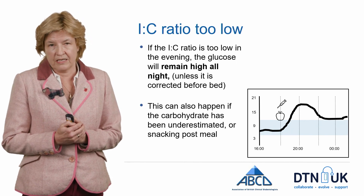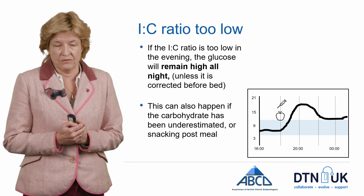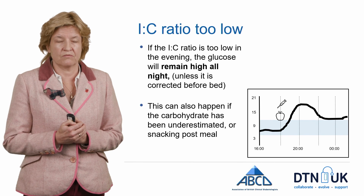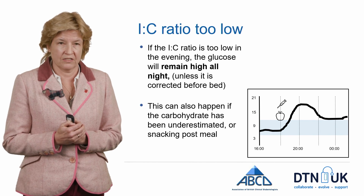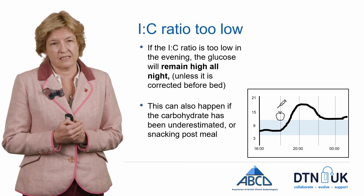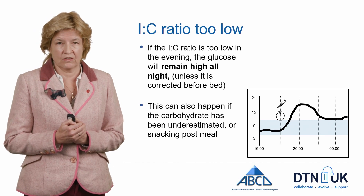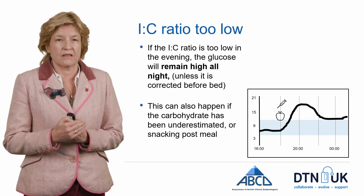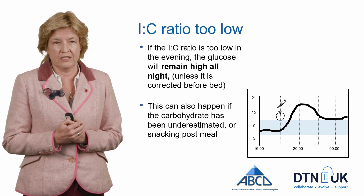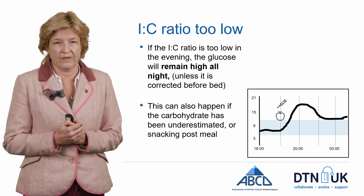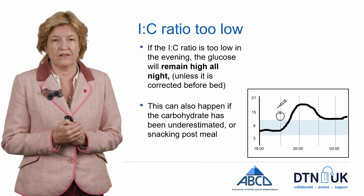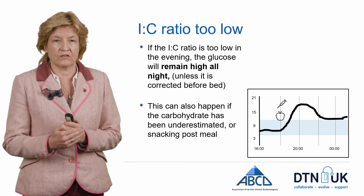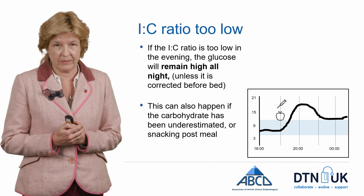If your insulin-to-carbohydrate ratio is too low — in this example it's in the evening — then the glucose level doesn't return back into the target range. If you don't check your glucose prior to going to bed then it will be high all night. So in this example the insulin-to-carbohydrate ratio is too low. Obviously this could also happen if you've underestimated the amount of carbohydrate in the evening meal, or if you've gone on and had a snack after the evening meal.